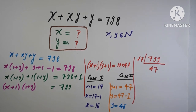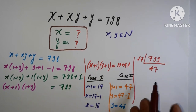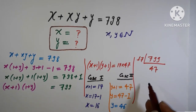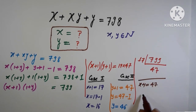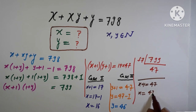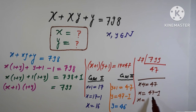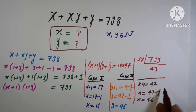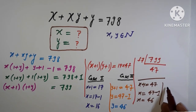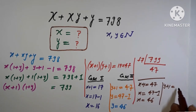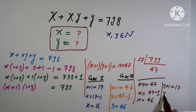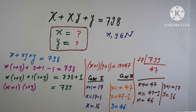In Case 2, x plus 1 equals 47, so x equals 47 minus 1, giving x equal to 46. And y plus 1 equals 17, so y equals 16.